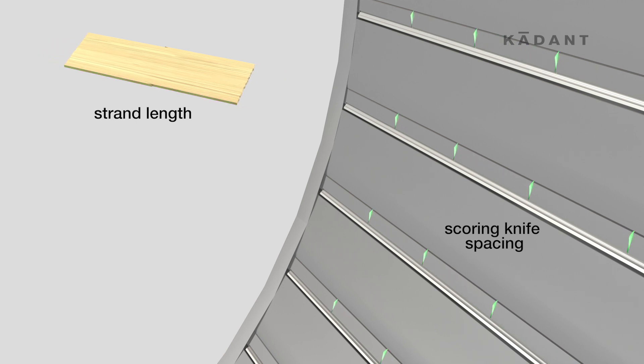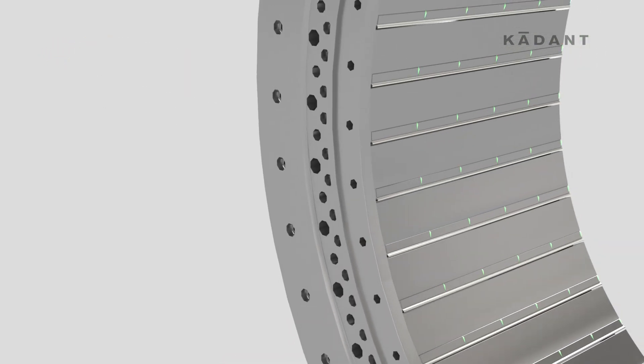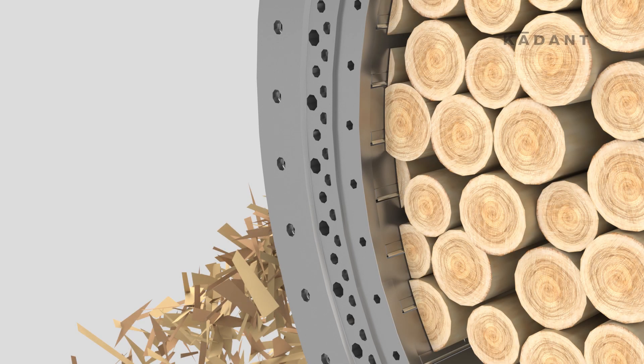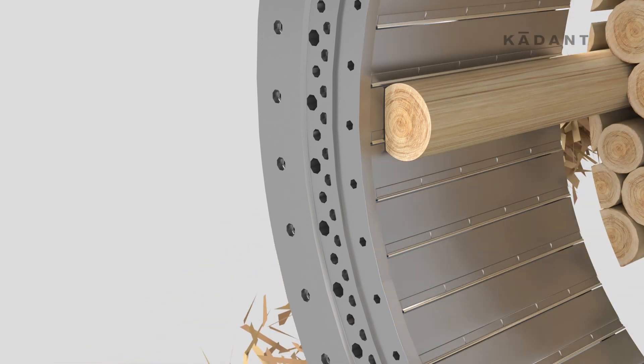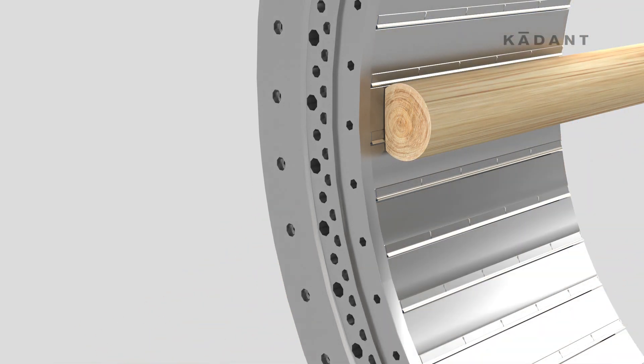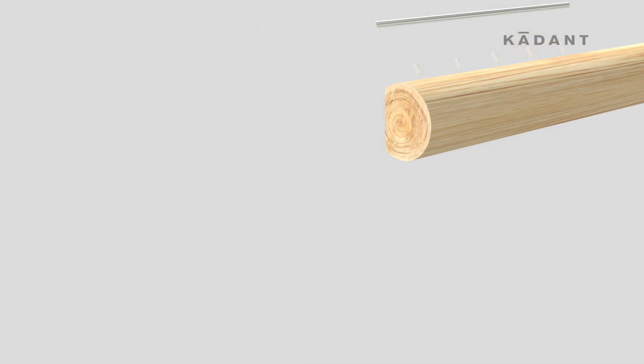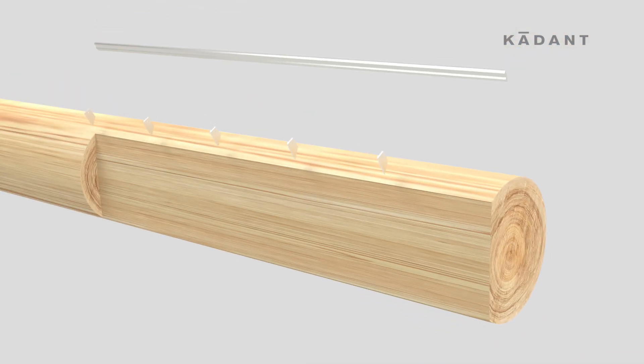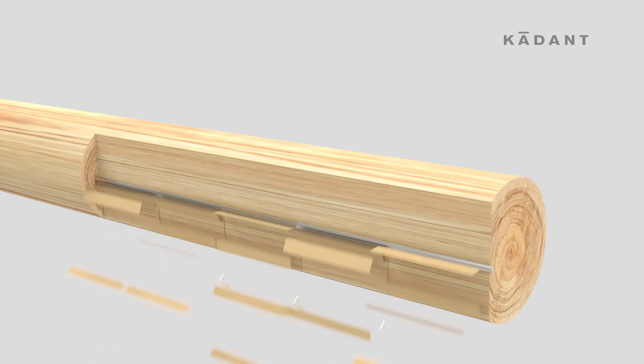These scoring knives are installed in our scoring knife holder and protrude past the cutting knives. As they advance through the logs, they cross-cut or score the wood fibers before the cutting knife shaves the logs, resulting in precise length strands.